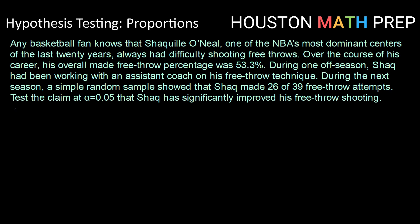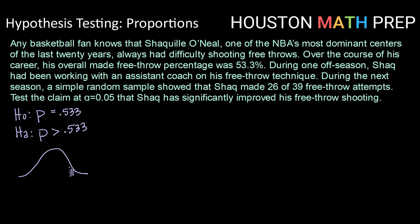Let's begin with a pair of hypothesis statements. Our null hypothesis is that the proportion equals the status quo: 53.3%, or 0.533. And if we're interested in showing that he significantly improved his free throw percentage, then we're looking for P to be greater than 0.533. That means we have a one-sided right-hand test, or upper-tailed test.